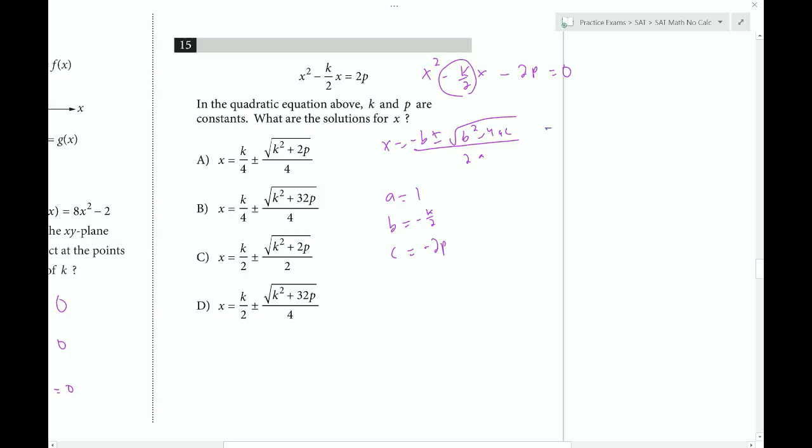Now we just plug in. We get negative b, which is going to be k over 2. Plus or minus square root of b squared. So that's going to be k squared over 4. Minus 4 times a, which is 1. Times c, which is negative 2p. Divide all that by 2 times a. So just 2. So we get k over 2 plus or minus the square root of k squared over 4 minus, let's see. Well, actually, minus 4 and minus 2p. So there's two negative signs, which makes a plus. It's going to be plus 8p all over 2.